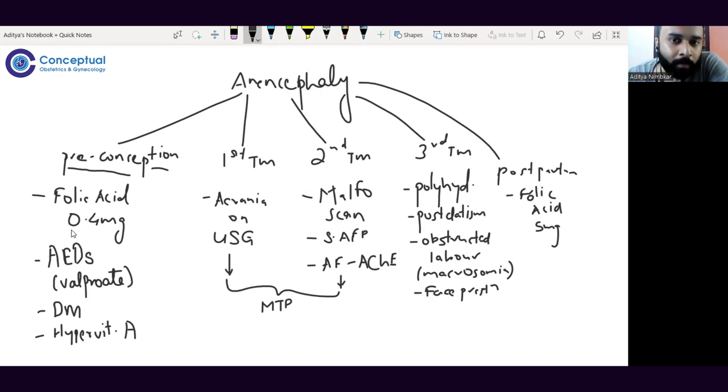If a female has had any history of any baby with any neural tube defect—not just anencephaly but even meningocele, Arnold-Chiari syndrome, or spina bifida—those patients should be consuming folic acid at the dose of five milligrams.